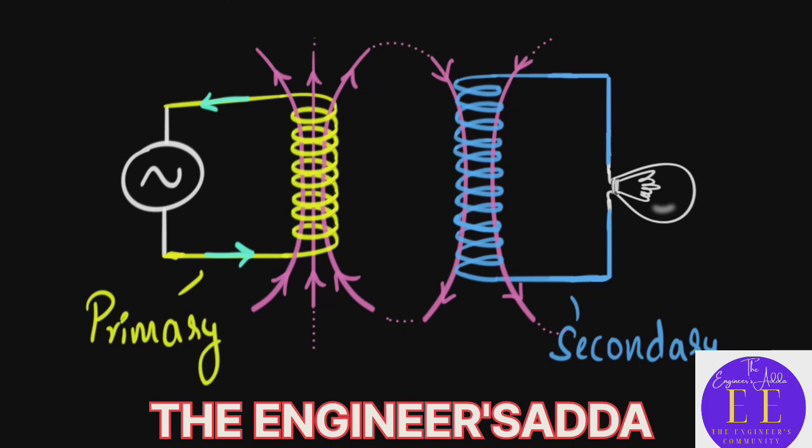And as a result, as the flux changes over here, as the magnetic field changes over there, the flux also changes in the secondary. And again, an induction takes place in the secondary. And because of that, there will be an EMF generated in the secondary. And as a result, there will be a current generated in the secondary. And that's how the bulb starts glowing.